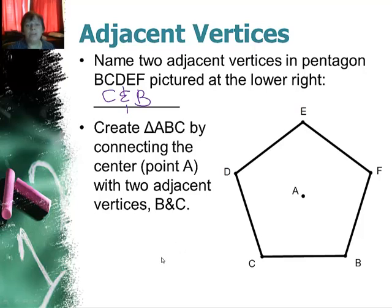Now I'm going to create a triangle ABC by connecting the center point A with the two adjacent vertices. So this is a triangle that we will be making to find areas.